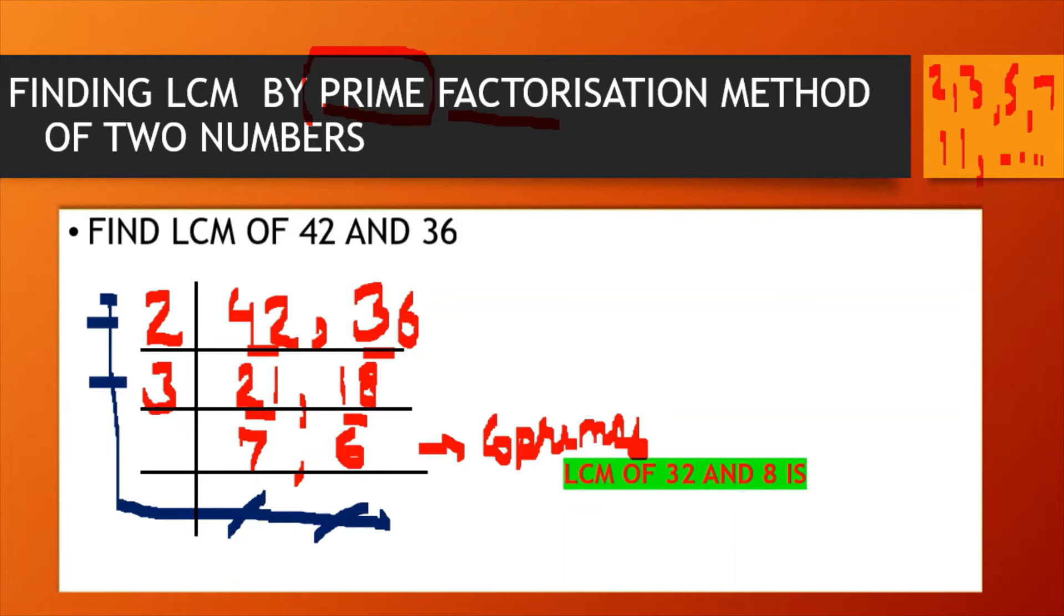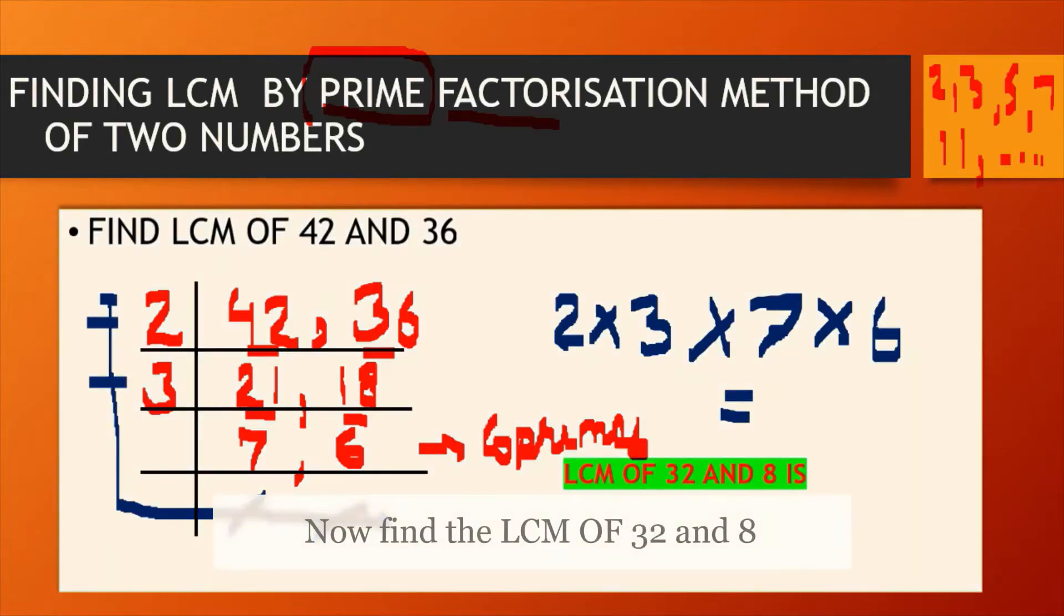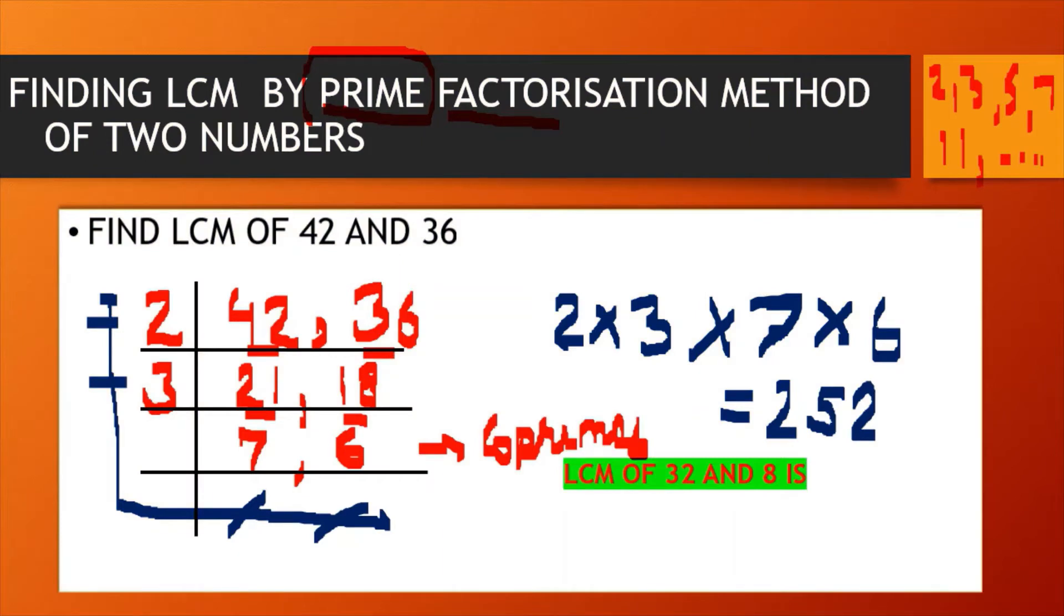So I want you to multiply and find, multiply and give me the answer. Come on, I am waiting. Is it 252 children? So children, the LCM of 42 and 36 is 252.